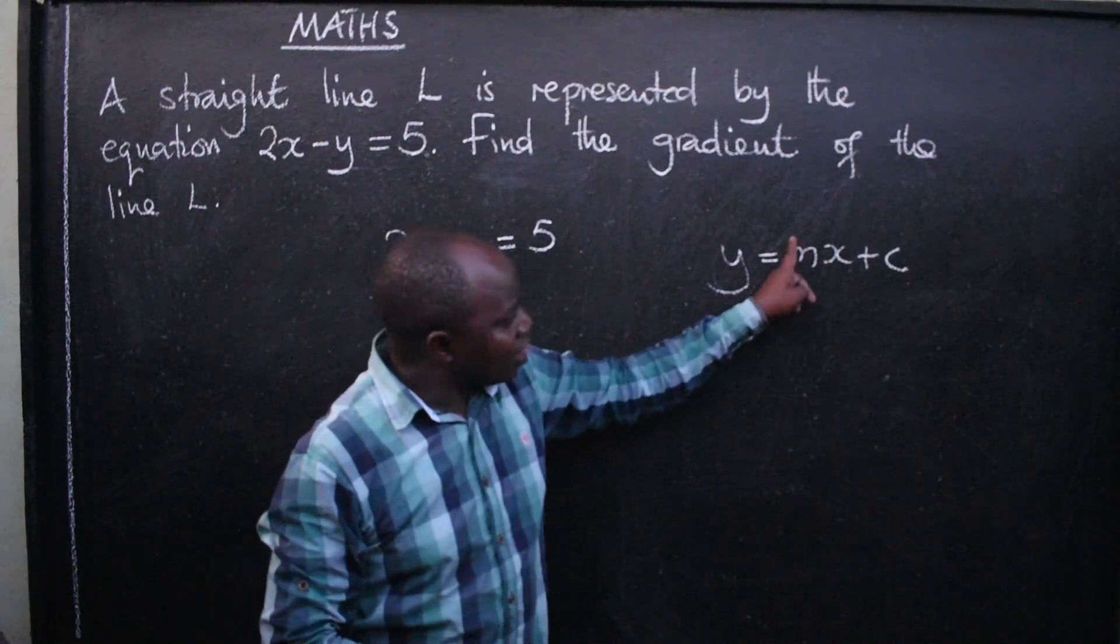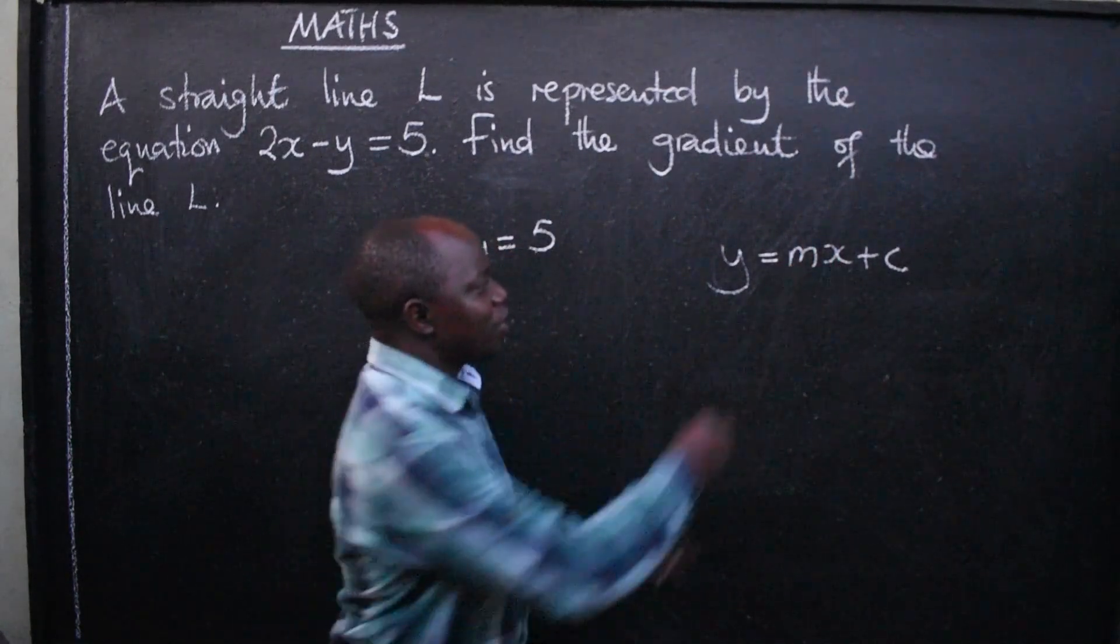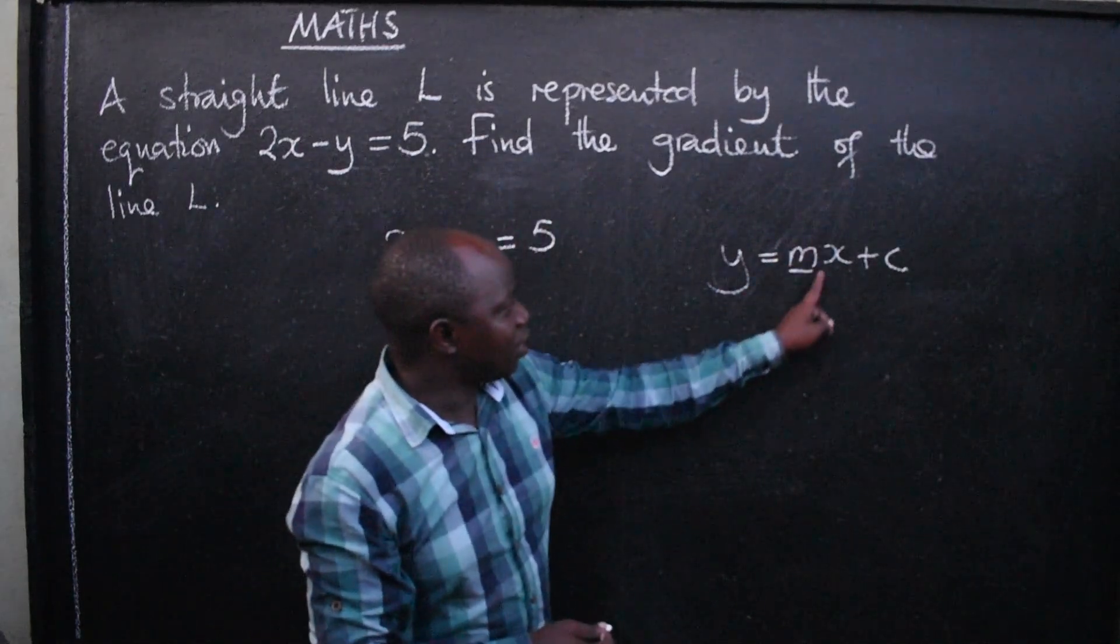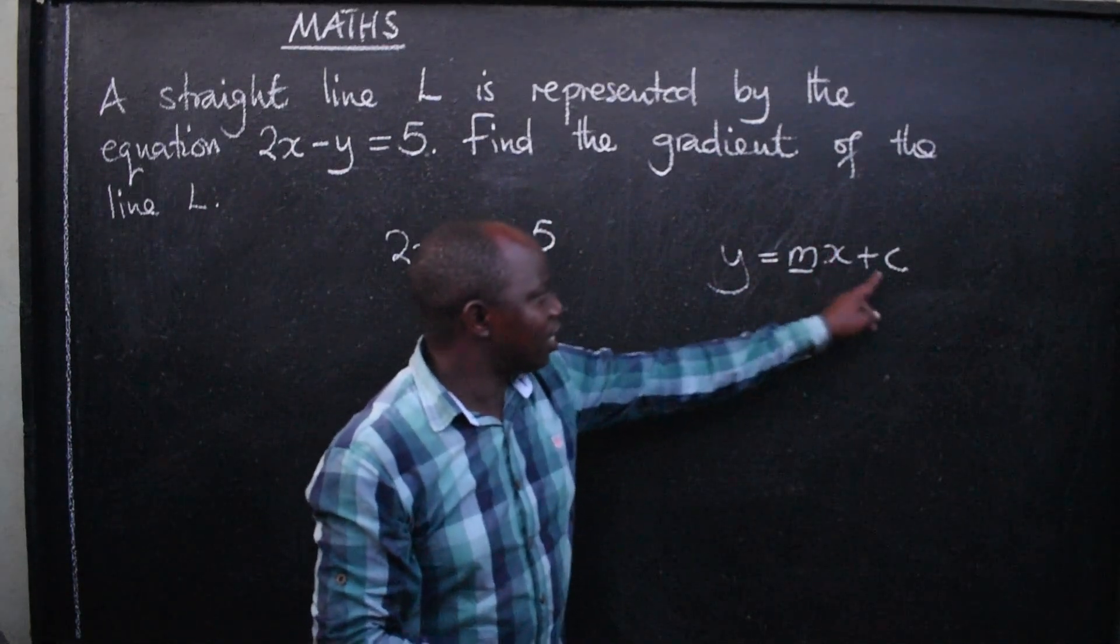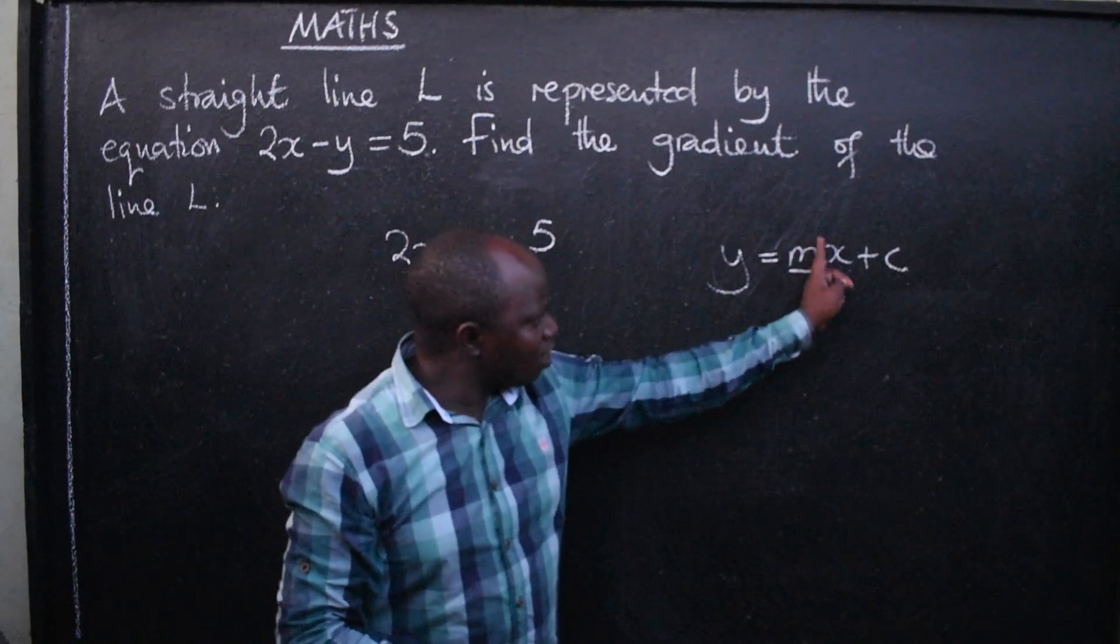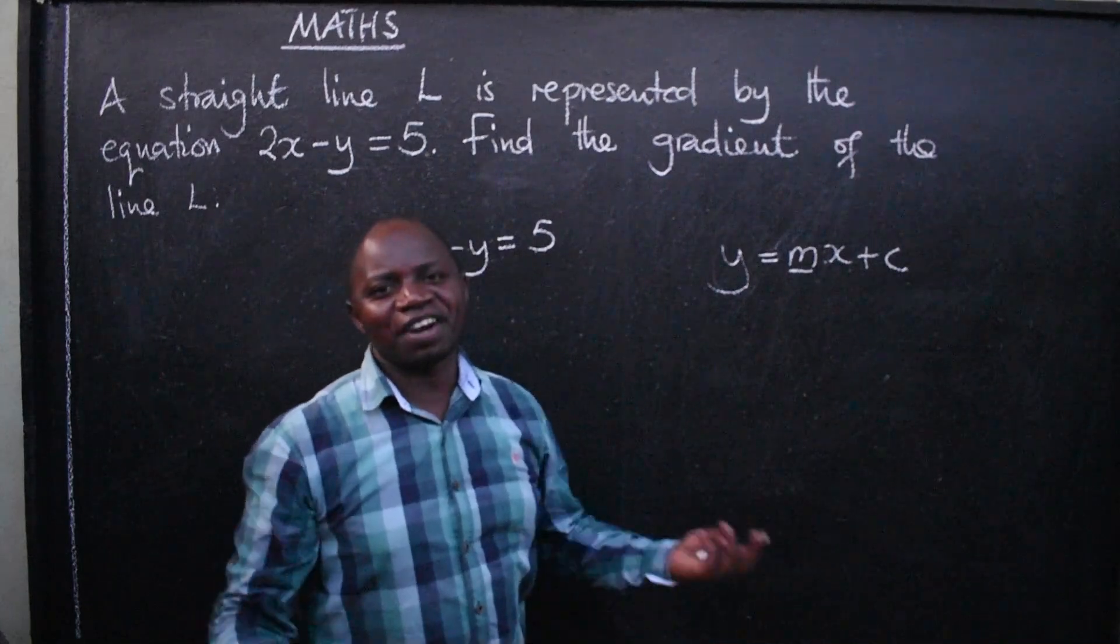Then the coefficient of x will be your gradient. So the gradient is here, the number that will be here. x here, this means constant. The coefficient, the number that will be here, will be the gradient.